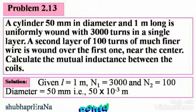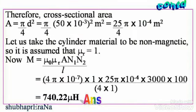Problem 2.13. A cylinder 50 mm in diameter and 1 meter long is uniformly wound with 3000 turns in a single layer. A second layer of 100 turns of much finer wire is wound over the first one near the center. Calculate the mutual inductance between the coils. Given: L = 1 m, N₁ = 3000, N₂ = 100, diameter = 50×10⁻³ m. Cross-sectional area A = π/4 × D², using diameter instead of radius.